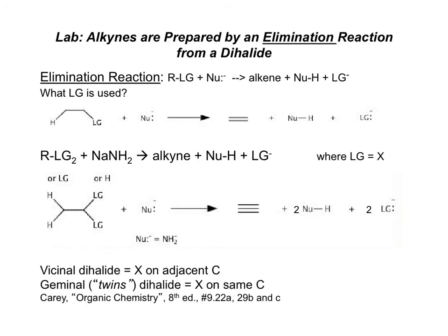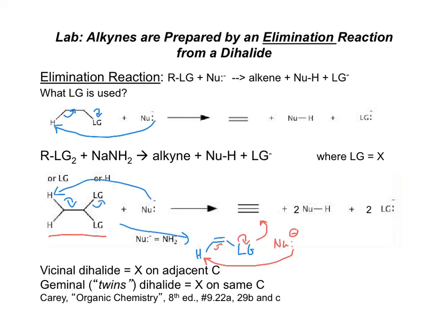Pi bonds are made using an elimination reaction. A leaving group and an H on a beta carbon are needed for that elimination reaction to occur. Note that this compound has two leaving groups, so two elimination reactions can occur to make the alkyne, as long as there are H's on the beta carbon.